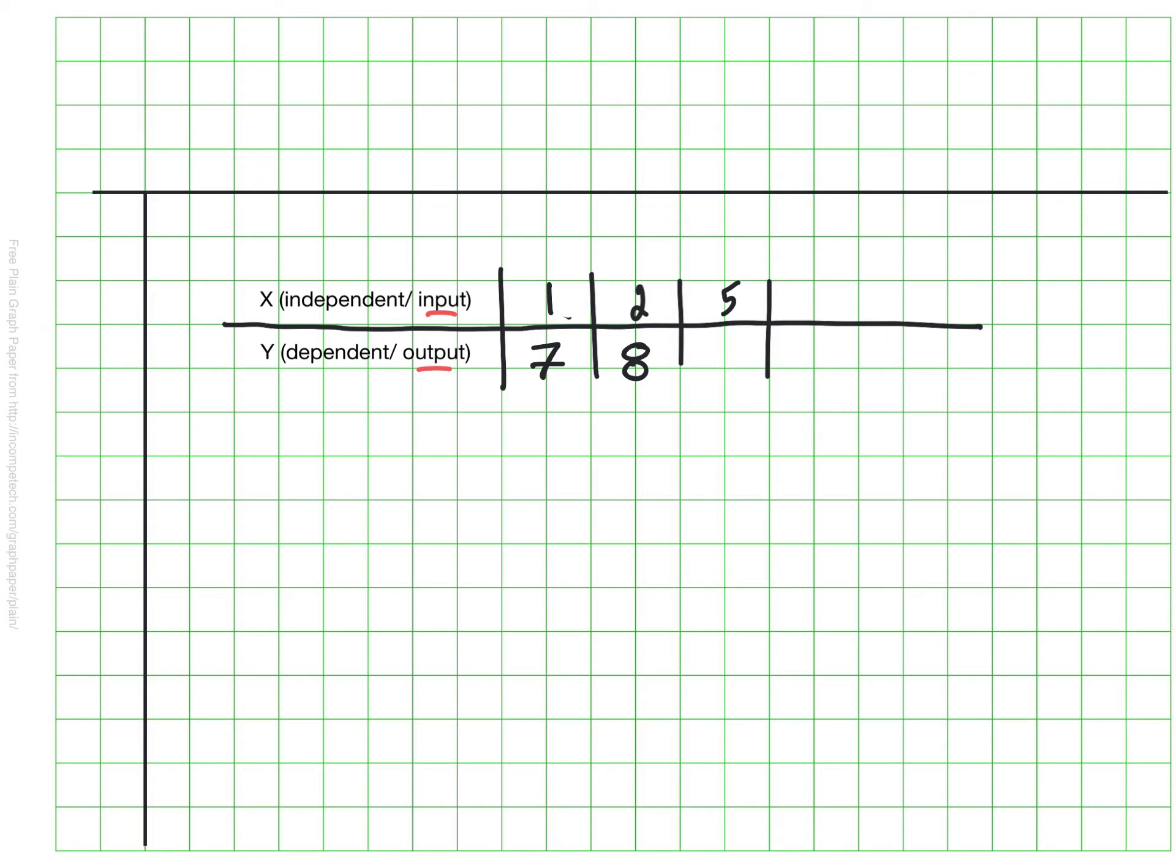When I'm doing rules, I always like to make sure I have at least three pieces of information to look for a pattern. So I'm going to give you one more. If X is five, Y is 11. So now think about what could work. Whatever that is, is the rule.